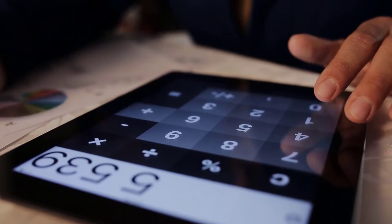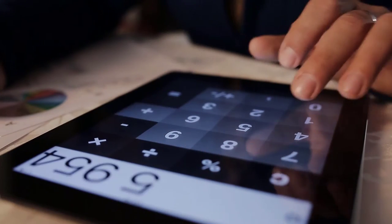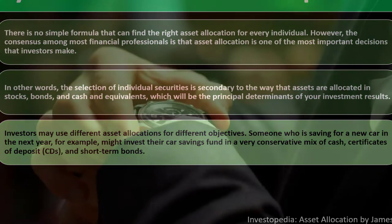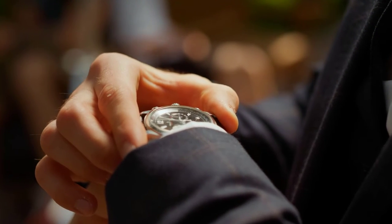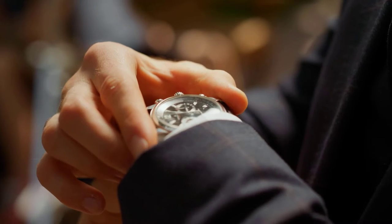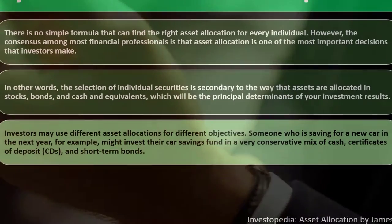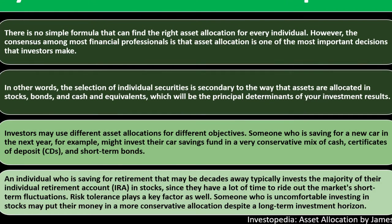Investors may use different asset allocations for different objectives. Someone saving for a new car in the next year, for example, might invest that car savings fund in a very conservative mix of cash, certificates of deposit, and short-term bonds. If the time horizon is coming up soon, we might not want our money in high-volatility assets since we're hoping to use that cash shortly.